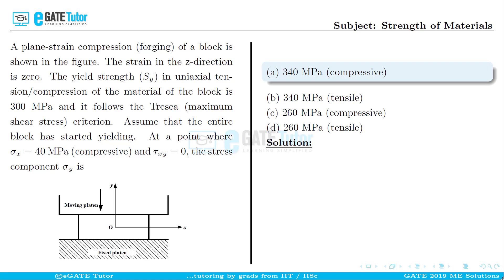This question is from strength of materials for two marks. A plane strain compression forging of a block is shown in the figure. The strain in the Z direction is 0. The yield strength in uniaxial tension or compression of the material is 300 MPa and it follows the Tresca maximum shear stress criteria. Assume that the entire block has started yielding. At a point where sigma_x = 40 MPa compressive and tau_xy = 0, the stress component sigma_y is?